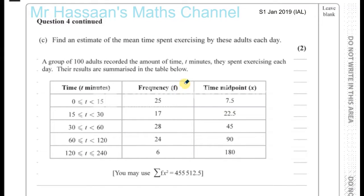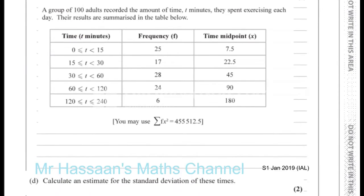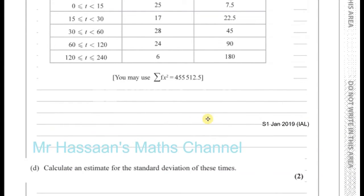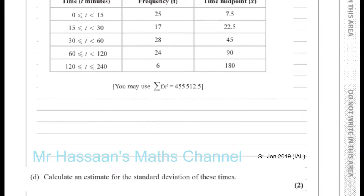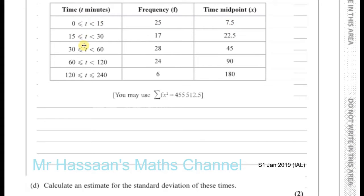We want to find an estimate of the mean time spent exercising by these adults each day. I've got the table here. They very kindly gave us the midpoints of each interval, which is what we need when finding an estimate of the mean time, because we don't know the actual value of any of the data. We just know there are 25 entries in this range, so we take the mid-interval value to estimate what those values are.